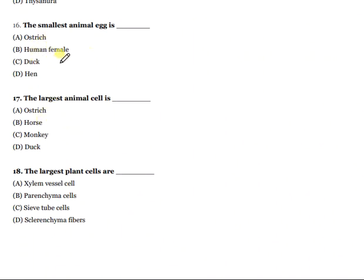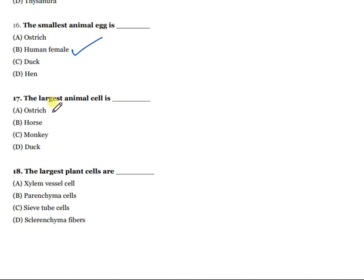The smallest animal egg is the human female egg. Moving forward to question 17: What is the largest animal cell?